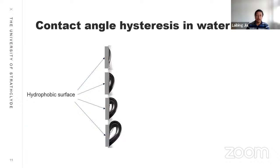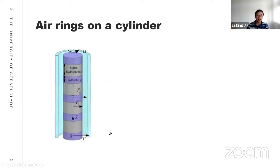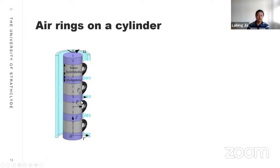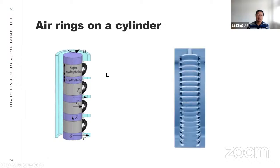We use this technique to create air rings. Here is a rotating cylinder on which we placed stripes of super-hydrophobic bands, so the cylinder alternates between super-hydrophobic and hydrophilic bands. We then introduced air into each section of the hydrophobic painted layers so that it forms bubbles on them. This is a photo taken from our experiment showing the air rings formed on this cylinder.